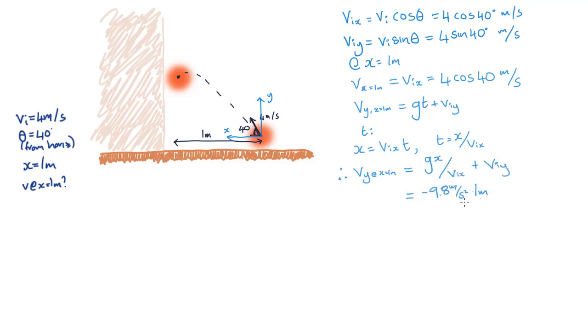Substituting in our values, we find that the vertical velocity is equal to minus 0.62 meters per second. The minus here means that the ball is moving downwards. Doing the same for the horizontal velocity, we multiply Vix by T, and find that the horizontal velocity at the wall is 3.06 meters per second.